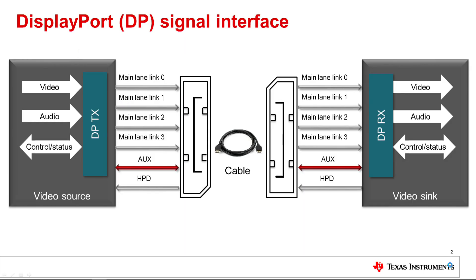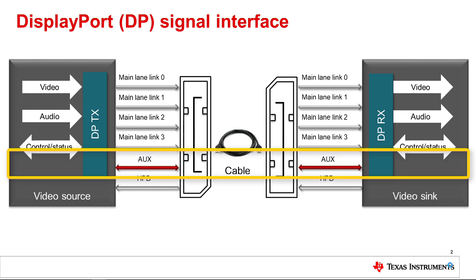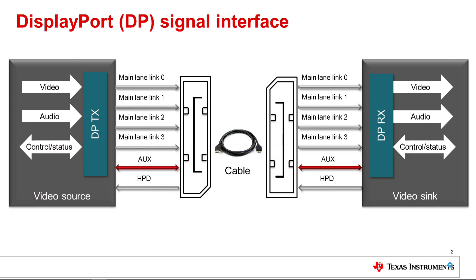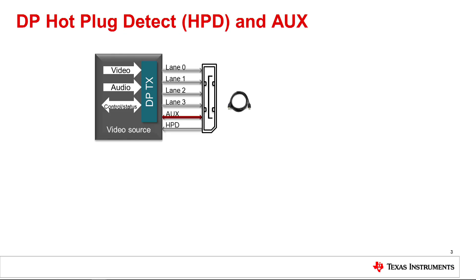For any DisplayPort source transmitter and sink receiver, there are three major components: the main link, the auxiliary or aux channel, and the hot plug detect, or HPD. The main link is used for transmission of video and consists of unidirectional serial data channels called lanes. The aux channel is a 1 megabit per second half-duplex bi-directional data channel used for control and status information. HPD is a 3.3-volt signal provided by the sink to the source.